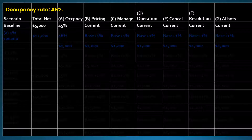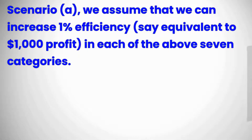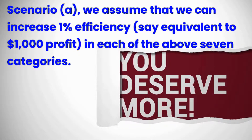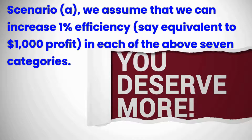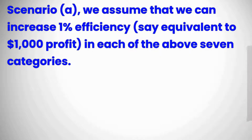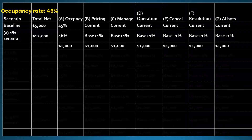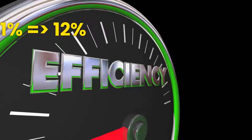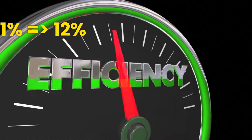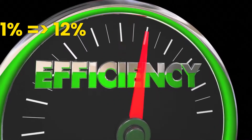In the table shown here, the first row shows that the service has a five thousand dollar net profit at a 45% occupancy rate. We use round numbers to figure out percentages more quickly. In Scenario A, we assume we can increase one percent efficiency — say equivalent to one thousand dollars profit — in each of the above seven categories. For an operation with one hundred thousand dollars revenue per year, this can be accomplished easily. Doing so increases the total net profit from five thousand dollars to twelve thousand dollars, or from five percent to twelve percent net profit.